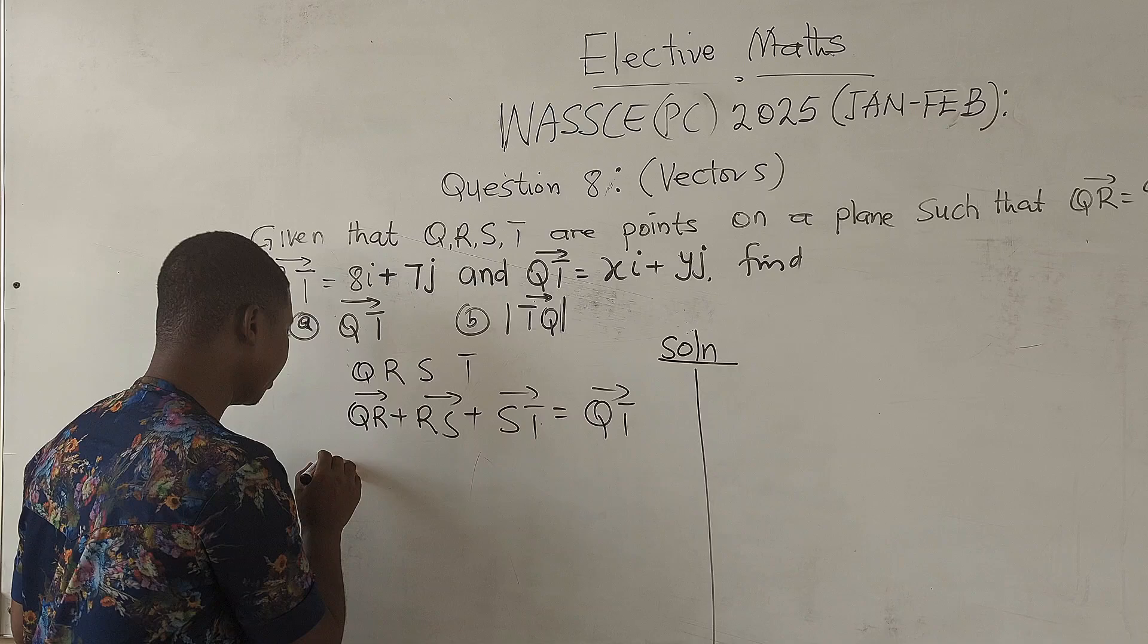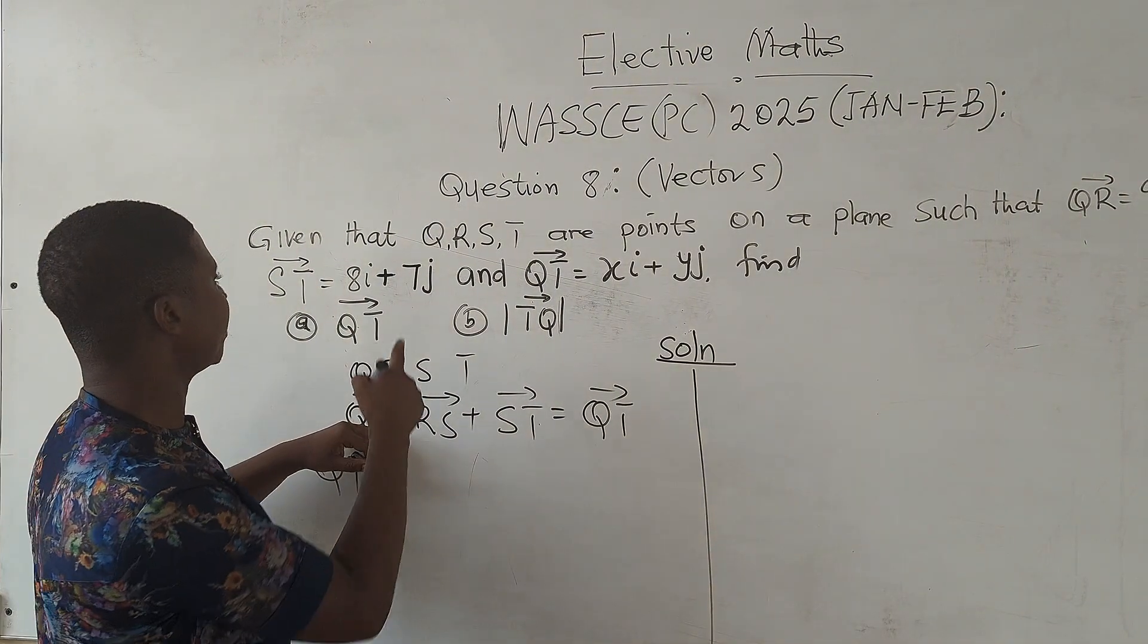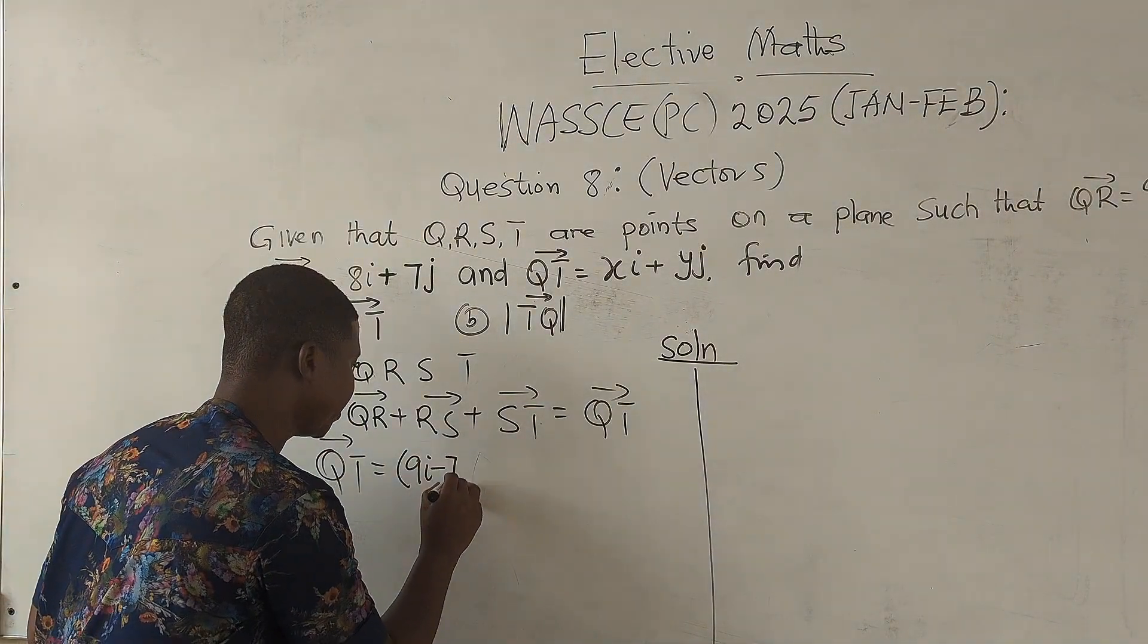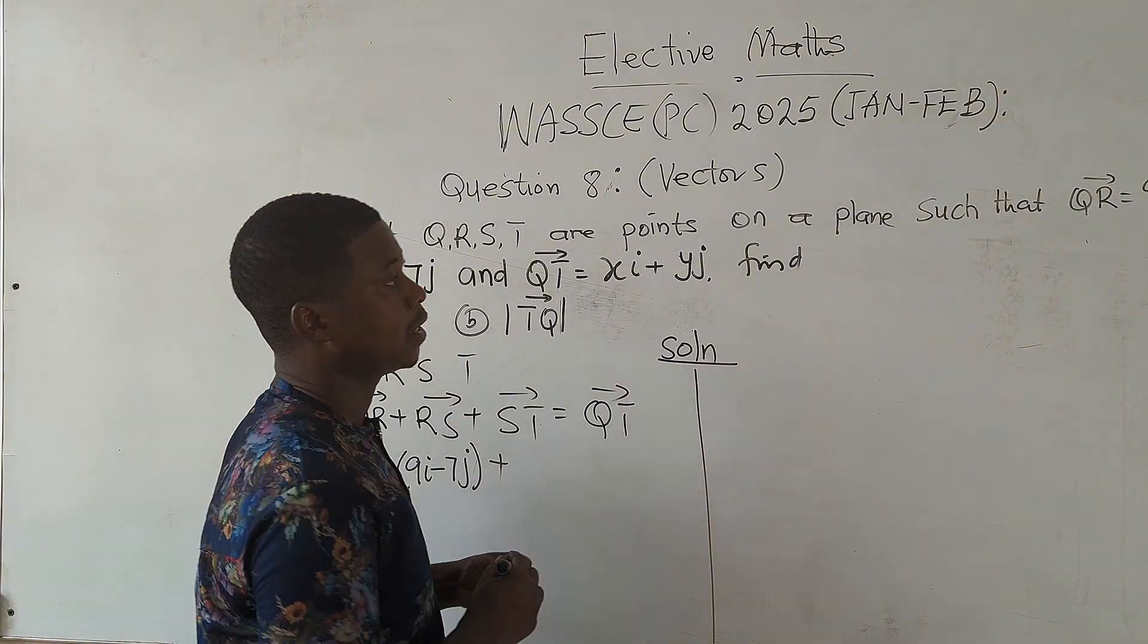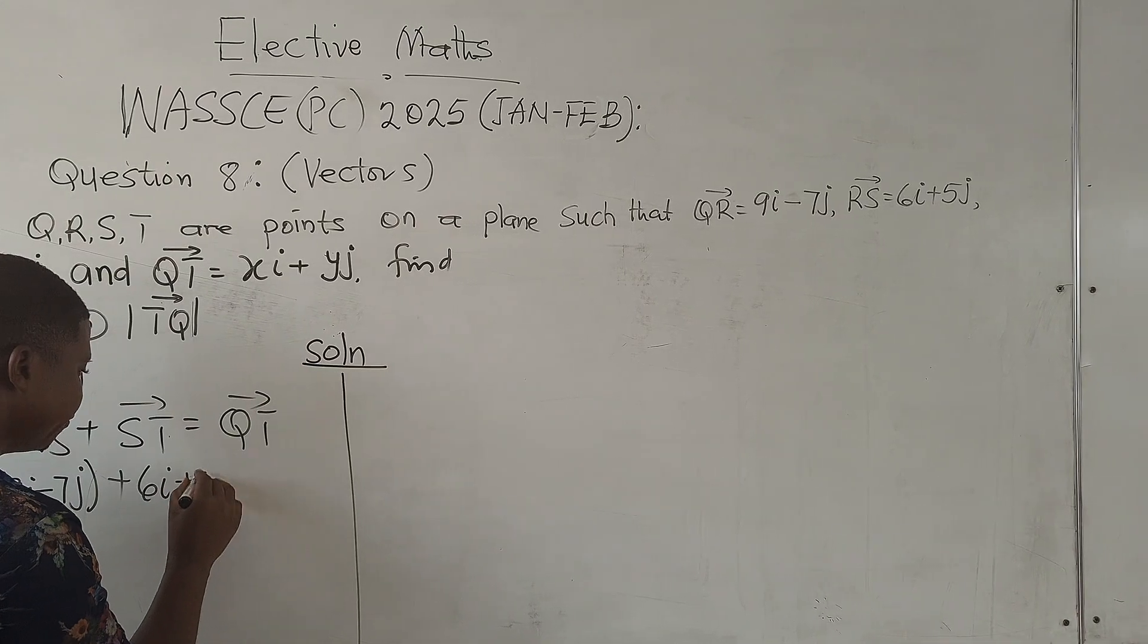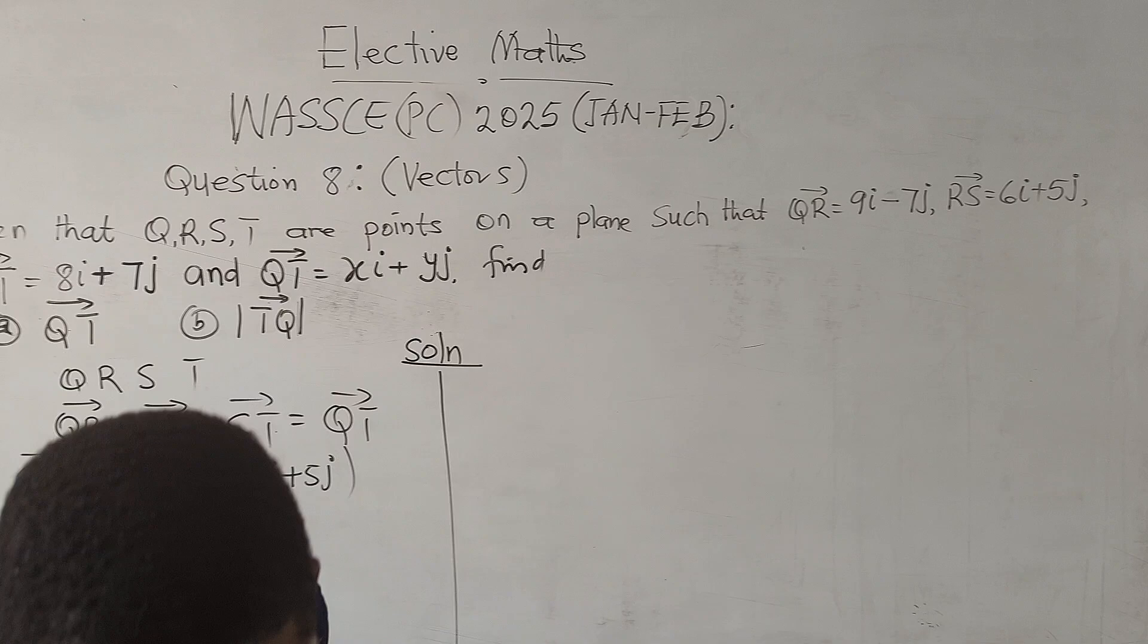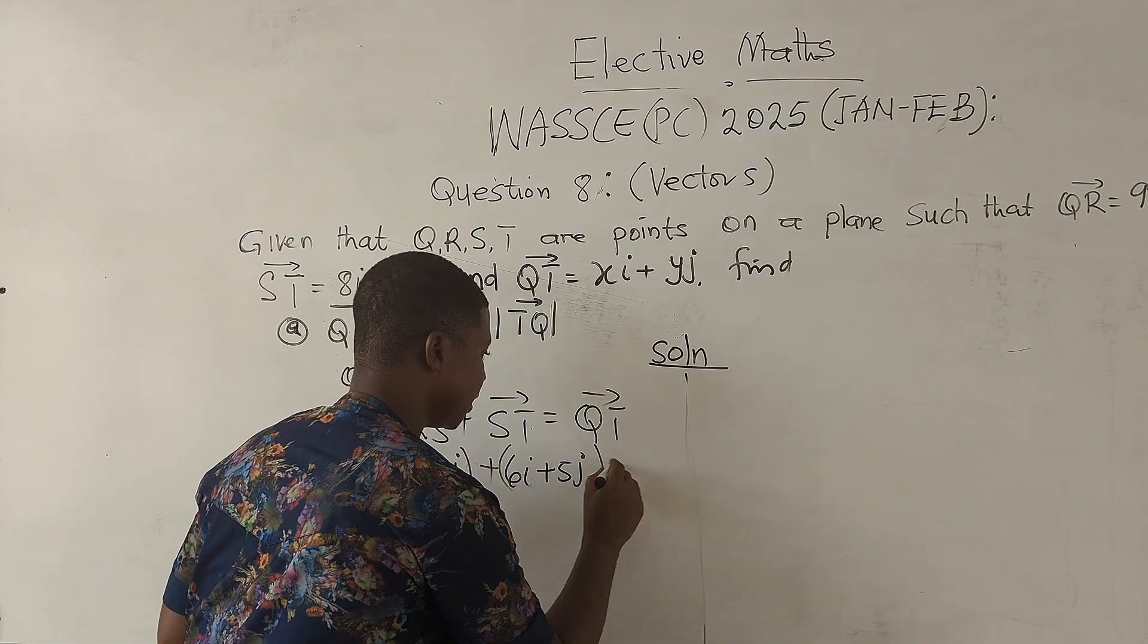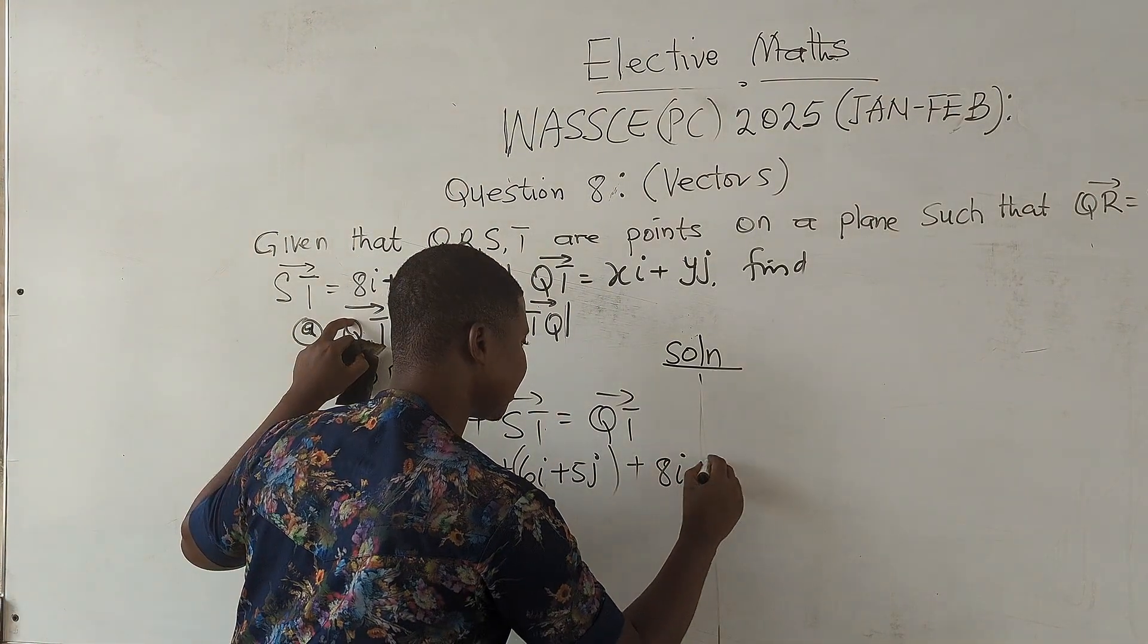So having known that, QT is equal to QR, which has been given to us as 9i - 7j, plus RS, 6i + 5j, and ST is 8i + 7j.